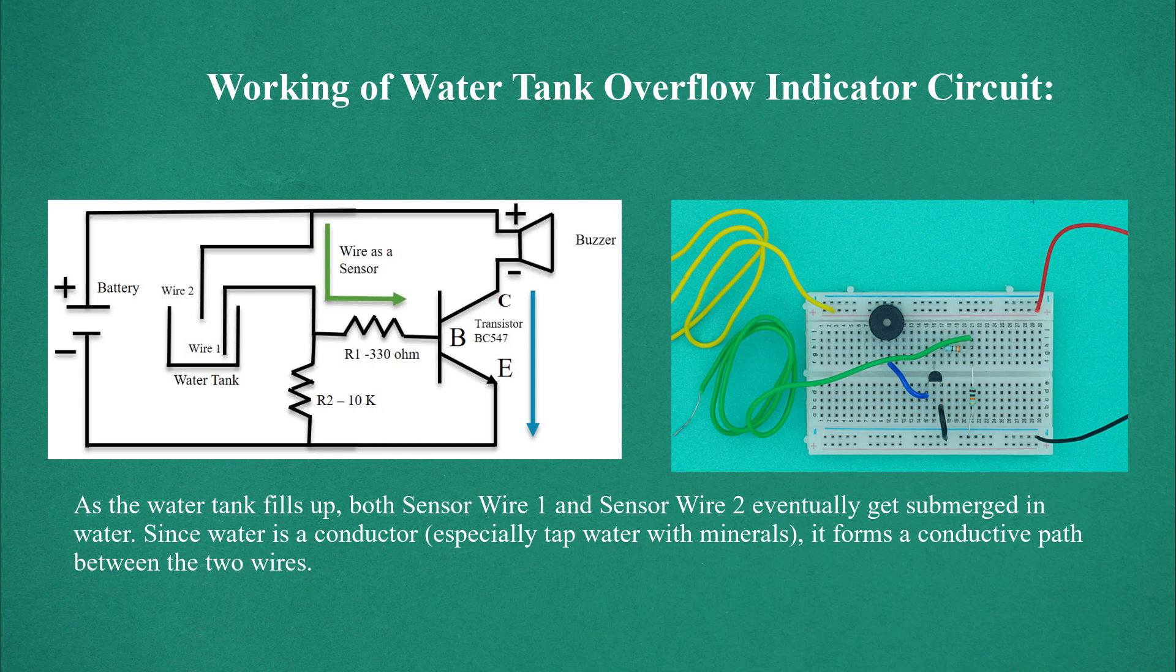As the water tank fills up, both sensor wire 1 and sensor wire 2 eventually get submerged in water. Since water is a conductor, especially tap water with minerals, it forms a conductive path between the two wires.